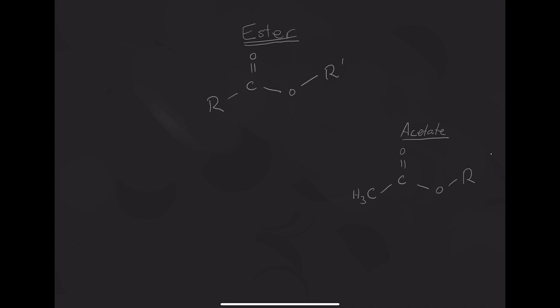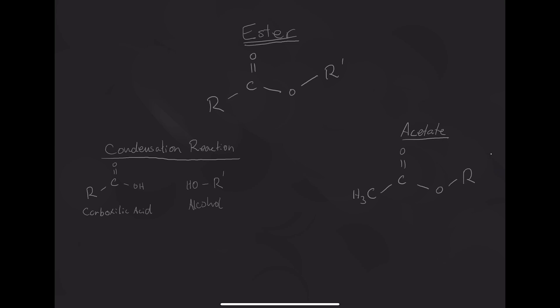One of the reasons that esters and acetates are so common is that you can use any different combination of R groups - every time it says R, you can substitute that with something else, so obviously there are a lot of potential combinations. One way of making esters is something called a condensation reaction, which is simply when you take an alcohol and react it with a carboxylic acid. The structure of a carboxylic acid is an alcohol group with a C double bond O and an OH at the end.